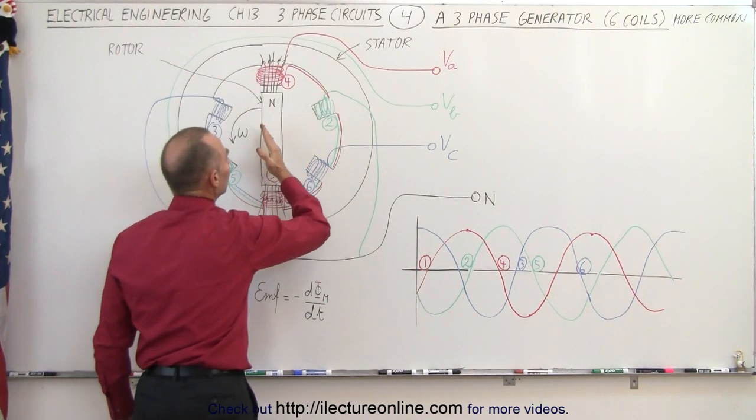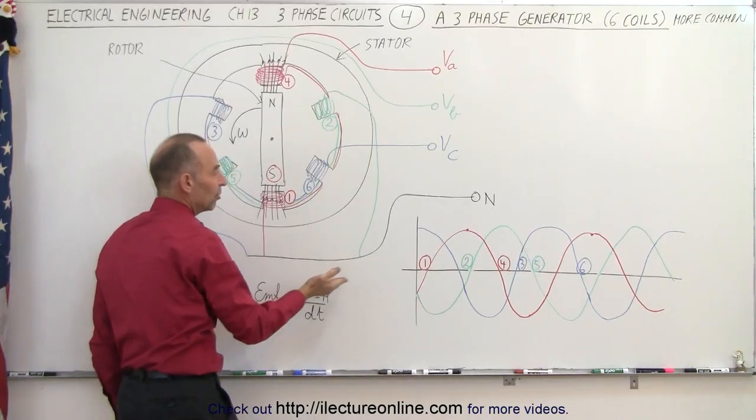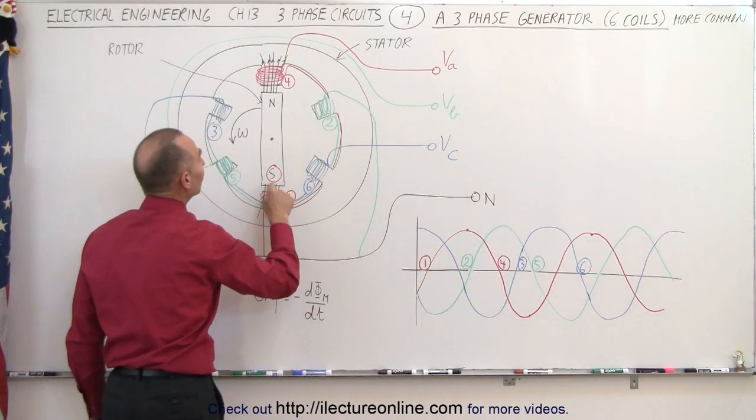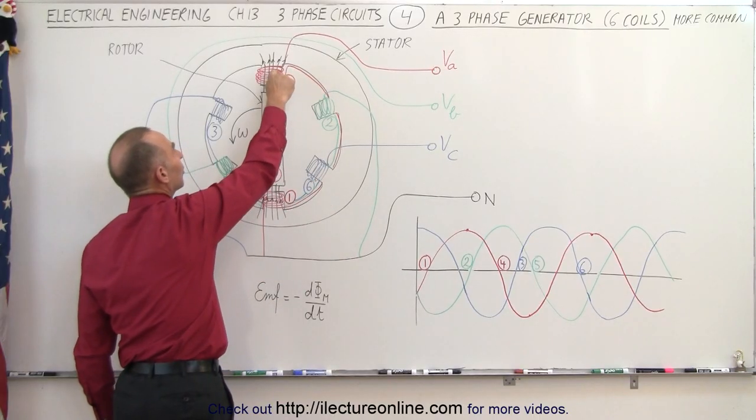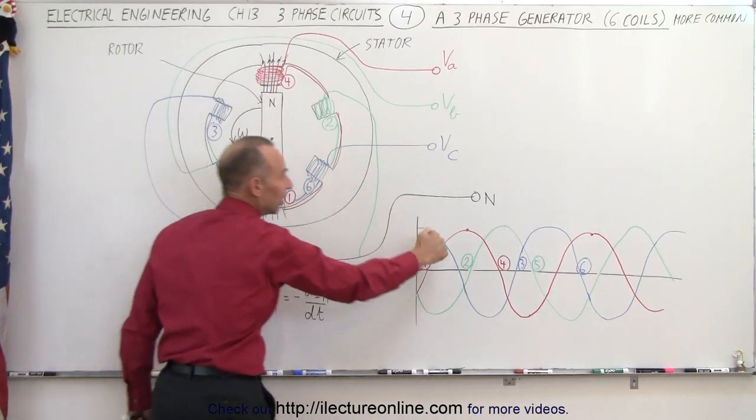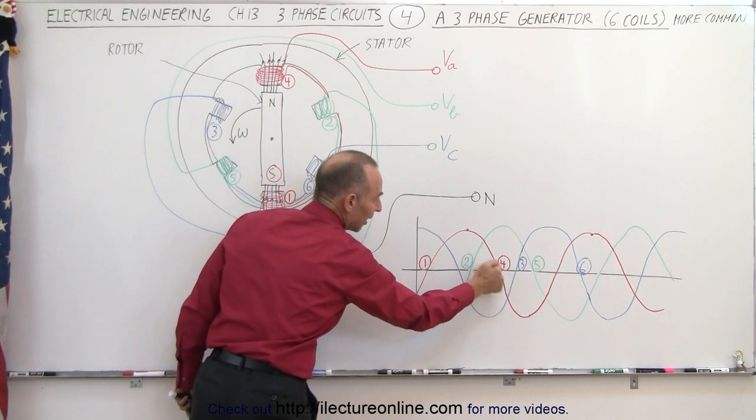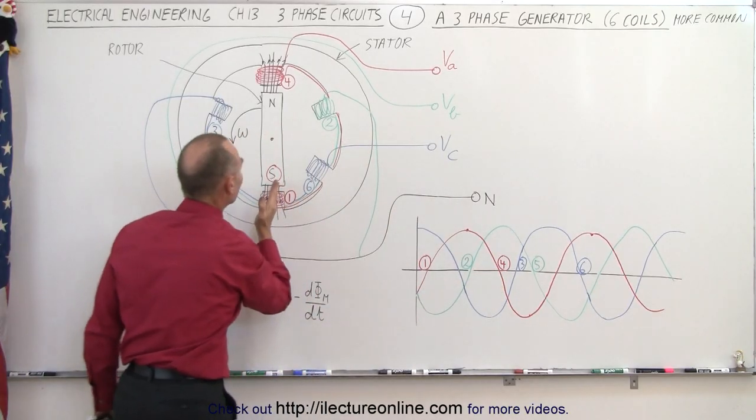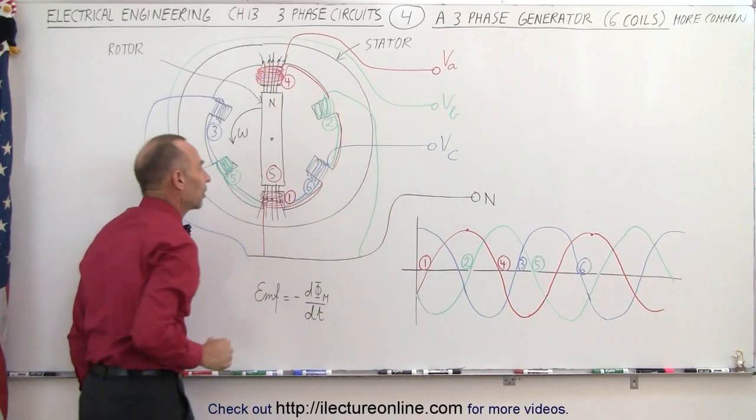As the rotor continues to rotate, the change increases, the EMF produced gets to a maximum, and then eventually reaches back to zero, when the south has then gone completely over here, and so from now the north will be down here, the south will be up there, and then you'll see that the phase, the red phase here, the A phase, will be at this point in time when the south of the rotor is over there.